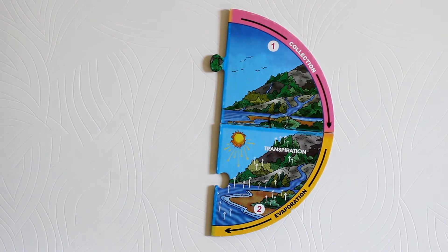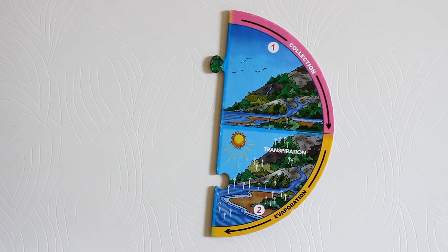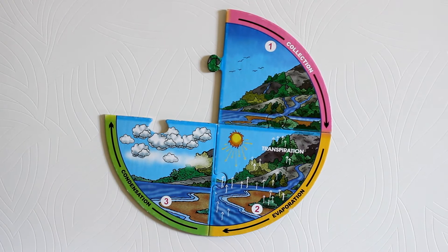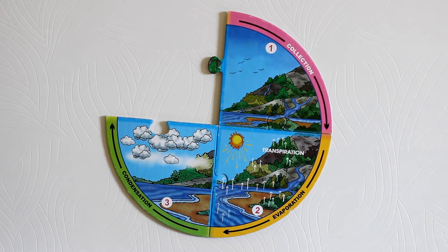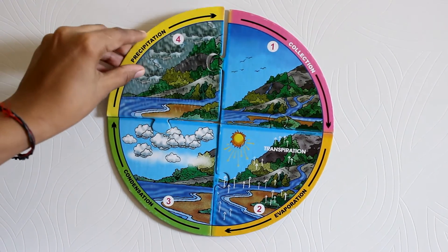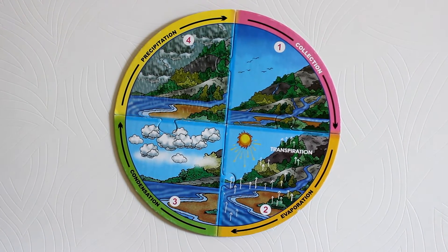Then stage three is when the evaporated water condenses and forms clouds. It's also called condensation. Stage four is also called precipitation.